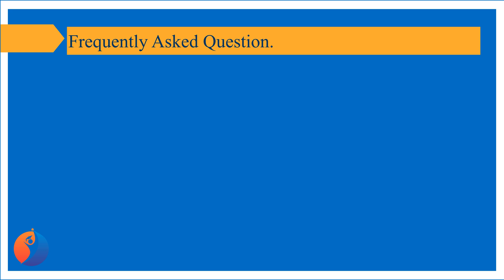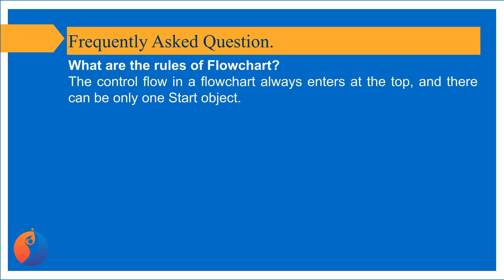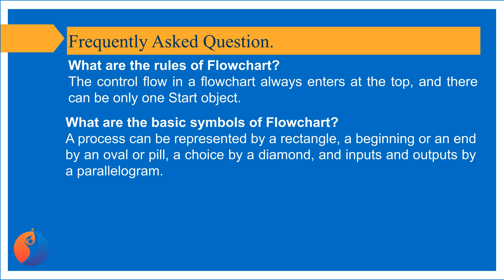Frequently Asked Questions: What are the rules of a flowchart? The control flow in a flowchart always enters at the top, and there can be only one start object. What are the basic symbols of a flowchart? A process can be represented by a rectangle, a beginning or end by an oval or pill, a choice by a diamond, and inputs and outputs by a parallelogram.